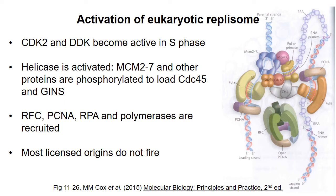It's interesting that only about 20% of licensed replication origins become activated. One reason to keep other licensed origins in reserve is in case replication is stalled due to DNA damage. If one replication fork gets stopped, the cell could activate a nearby replication origin to allow replication of the DNA from the other direction. As replication passes a licensed but not activated replication origin, the replisome simply pushes the MCM complexes off of the DNA.